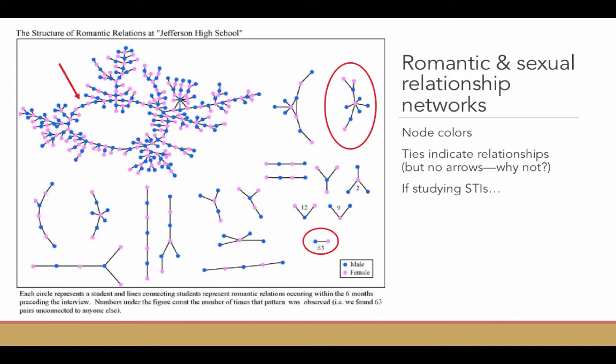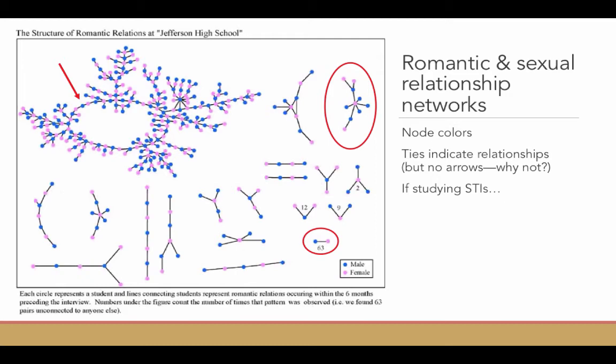You can imagine that the approach that you would take to intervention would look different depending on what kind of sexual network you're dealing with. The spread of that infection is going to look a lot different. If you had an idea of what that network looked like, intervention would be a lot easier. This is sort of what the epidemiologists did when they went to Indiana for the HIV outbreak.